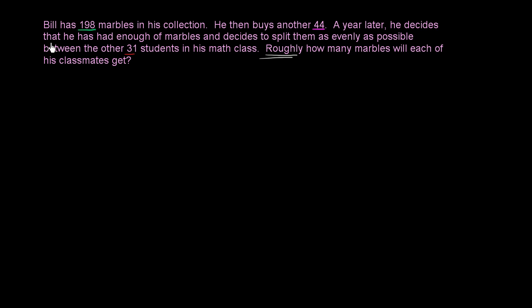He starts with 198 marbles. Let's round everything to the nearest 10, and maybe that'll simplify things. So 198, if we were to round to the nearest 10, we'd want to look at the ones place. The ones place has an 8. If you have a ones place that's 5 or greater, then you're going to round up.